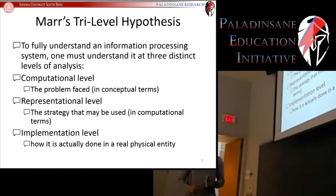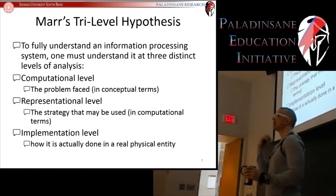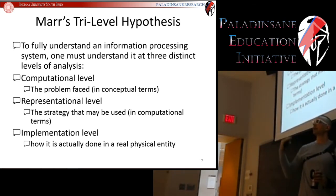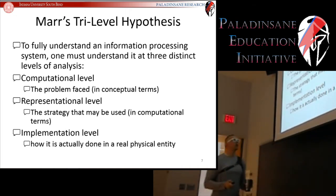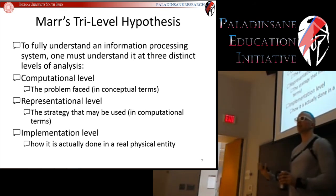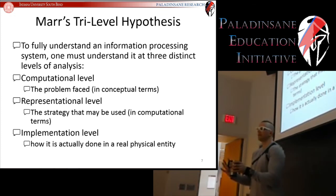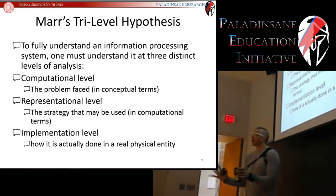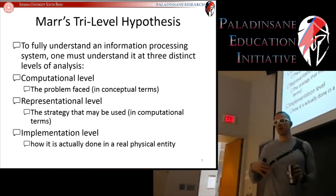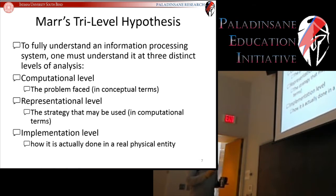Recall Marr's Tri-Level Hypothesis. If we want to fully understand an information processing system — that is, fully understand our mind — we need to address three levels. Level one is the computational level: we need to know the problem we're trying to explain, meaning what it is that a human mind can do. We can remember up to seven plus or minus two digits in working memory, alphabetize lists, navigate the environment, perform on Jeopardy. We first need a list of everything we can do. Once we have that, we've solved the computational level.